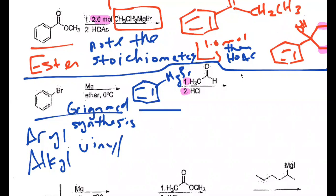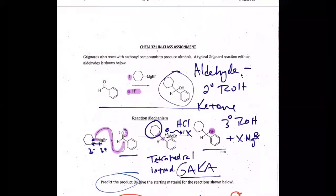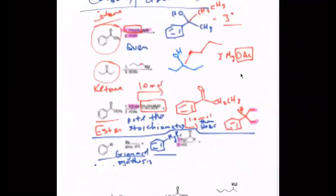Aldehyde plus Grignard gives a secondary alcohol; ketone plus Grignard gives a tertiary alcohol. You see how all this stuff works together — it's like Legos. Once you learn one piece, the other pieces kind of go with it. This last page is Grignard addition to carbonyls. This second reaction here is no different from what we did before — adding Grignards to carbonyls — it's just written differently, with the reagents over the arrow.